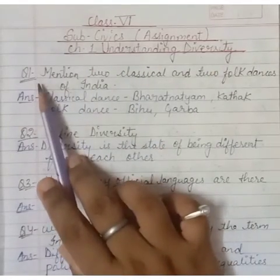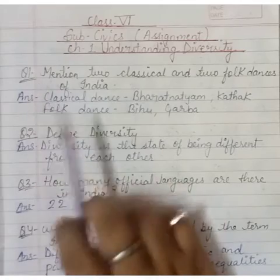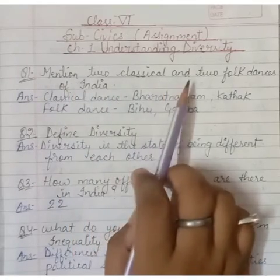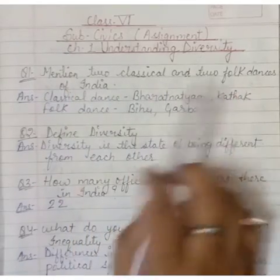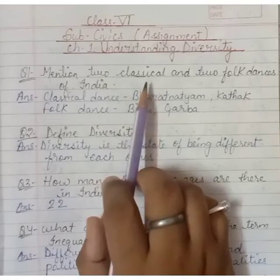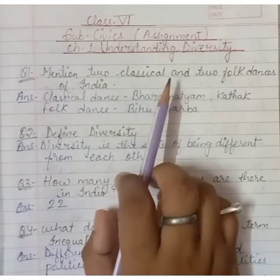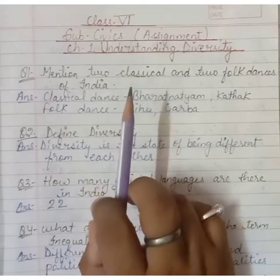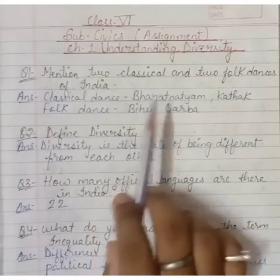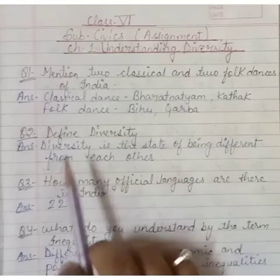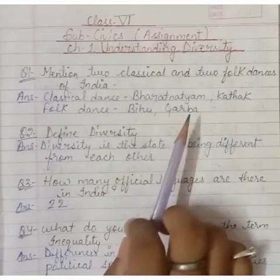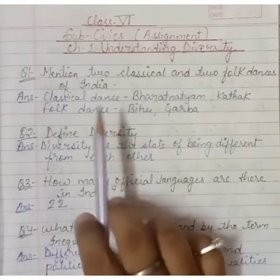The first question of your assignment is: mention two classical and two folk dances of India. The classical dances are Bharatanatyam and Kathak, and the folk dances are Bihu and Garba.